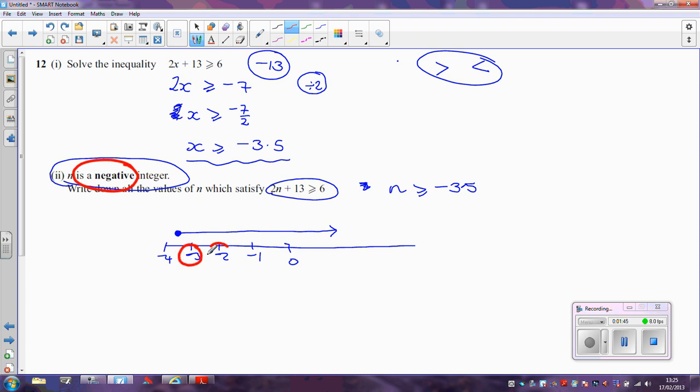So the answer there is just minus 3, minus 2, and minus 1. Those are the only possible negative integers which are greater than or equal to minus 3.5. Thank you.